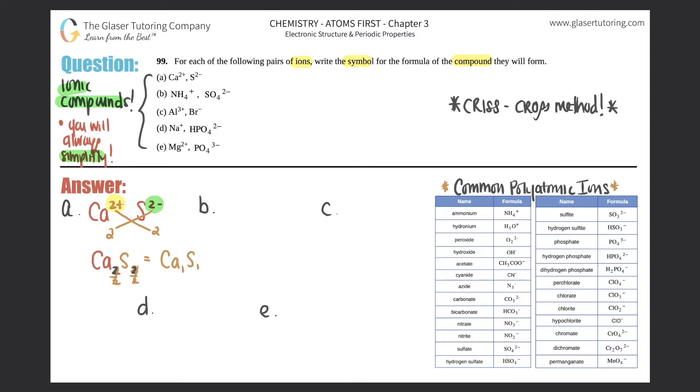So here it would be Ca₁S₁. Remember, whenever you have a one in your formula, it's always an empirical formula. Empirical formulas are always the simplest formulas. Do you have to write the ones? Absolutely not. I can just get rid of those and it becomes CaS. Box that answer off. That's the answer for a.